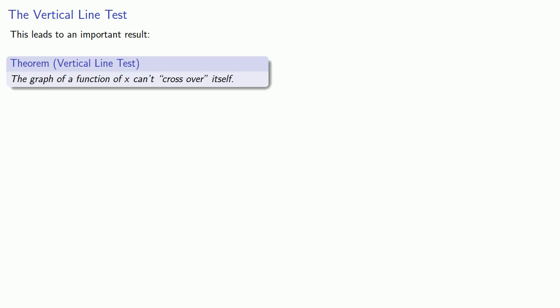This leads to an important result, sometimes called the vertical line test. The graph of a function of x can't cross over itself. In other words, we can't have a portion of the graph that's above another portion of the graph.